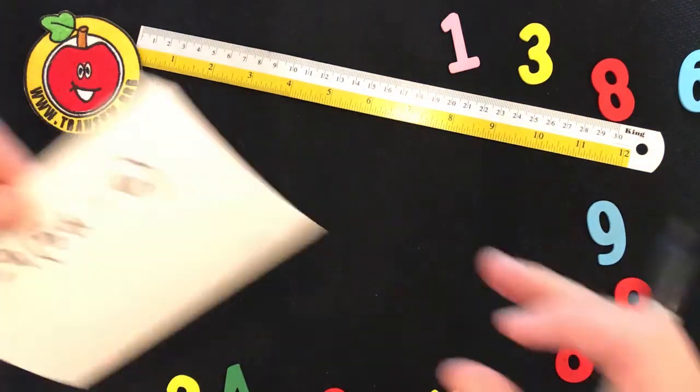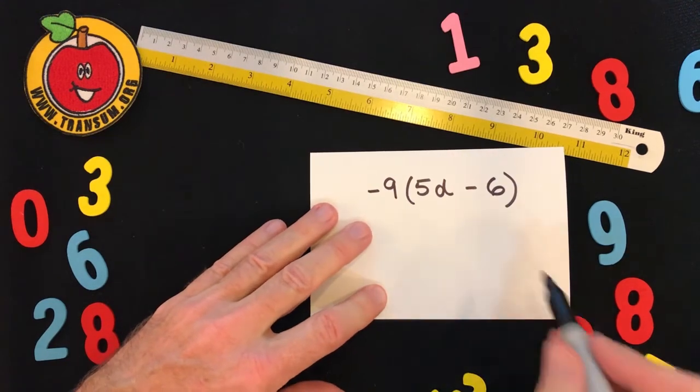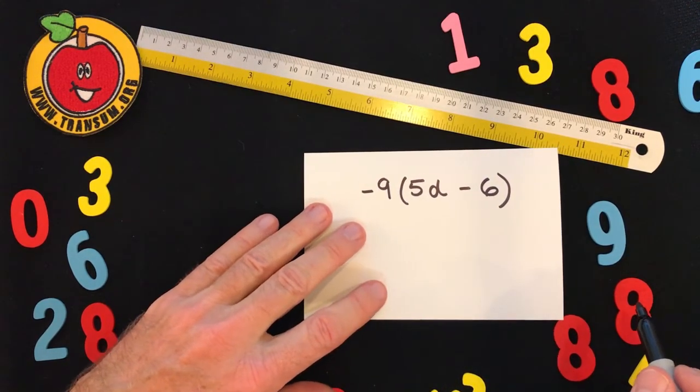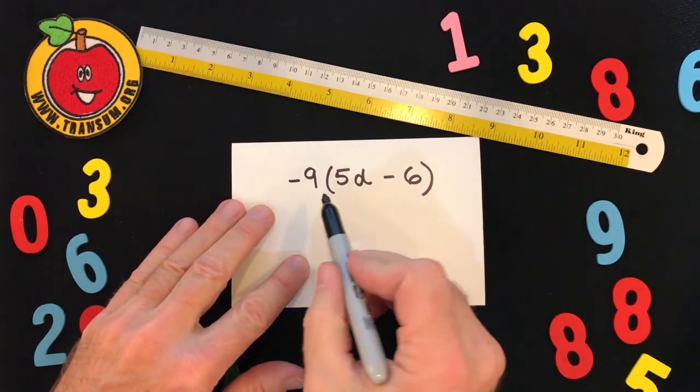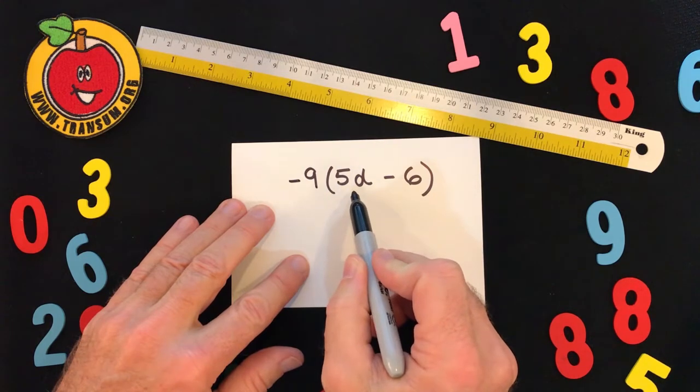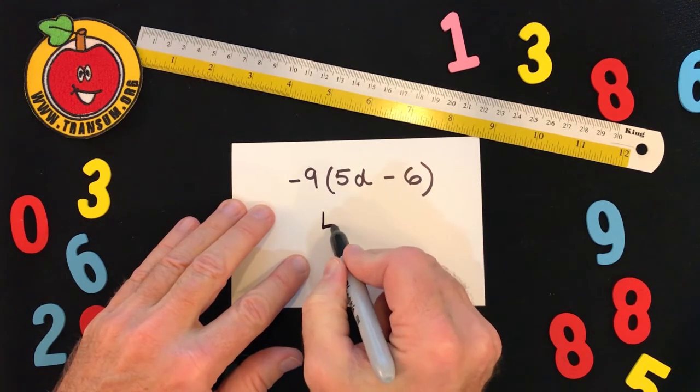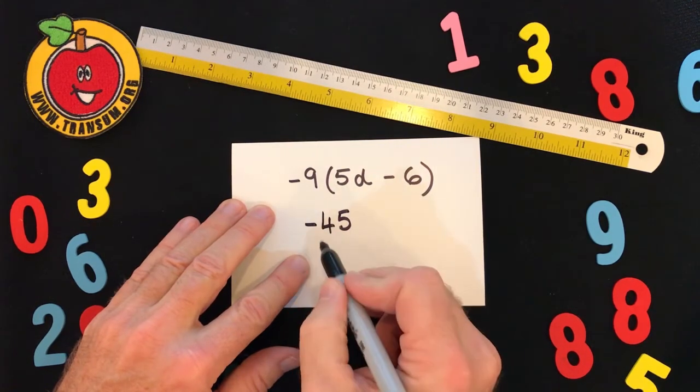And then multiplying the negative three by the five, we have minus 15. So the answer is minus 6c minus 15. Here again, another similar example. The minus nine needs to multiply both of those terms inside the brackets. So we'll do the first one: minus nine times 5d is 45d, not forgetting the minus sign there.